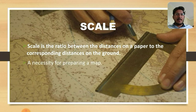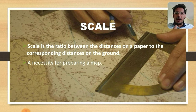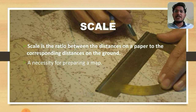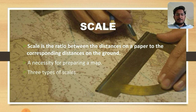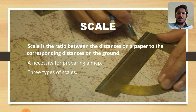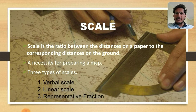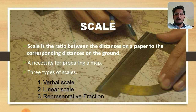Scale is a necessity for preparing a map. If we do not have a scale, we cannot have accurate proportion or accurate size and shape — the accuracy of the map will be lost. There are three types of scales: first, verbal scale; second, linear scale; third, representative fraction.